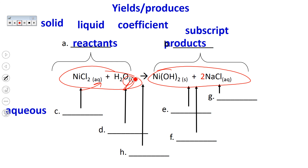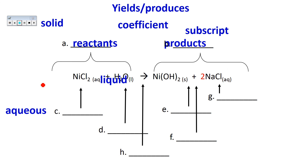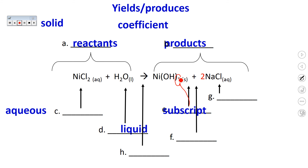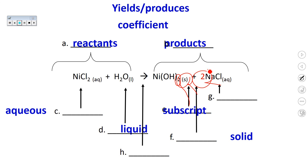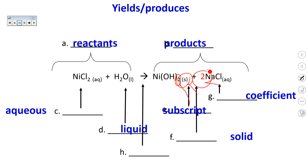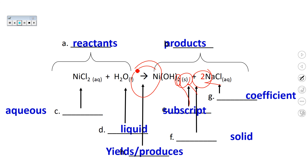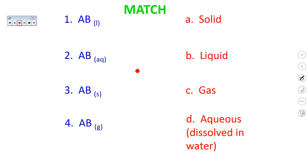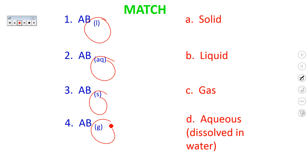D points to the letter L, which represents liquid. E points to a subscript — a number written at the bottom of a formula. S represents the solid state of matter. G refers to a coefficient — a whole number placed in front — which is used to balance equations. The arrow is called a yields or produces sign. So if you have L, AQ, S, or G as subscripts, they refer to state of matter: L = liquid, AQ = aqueous, S = solid, G = gas.